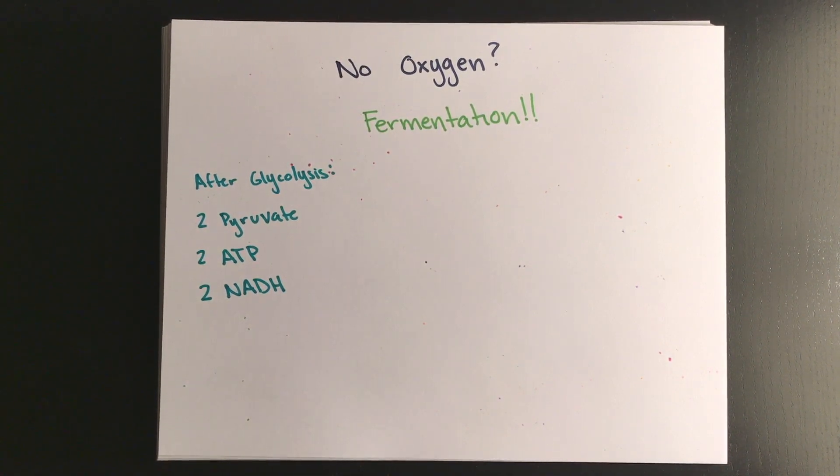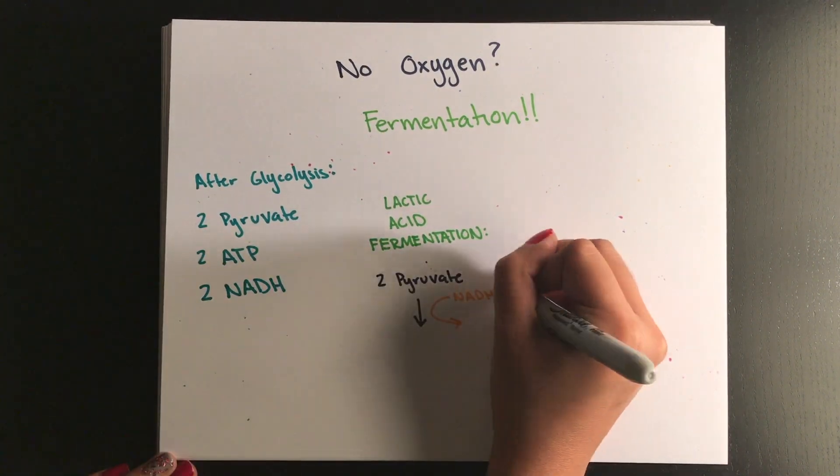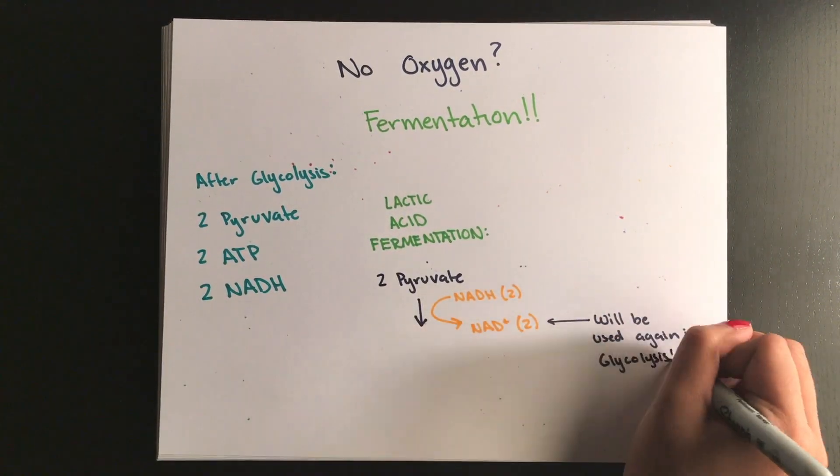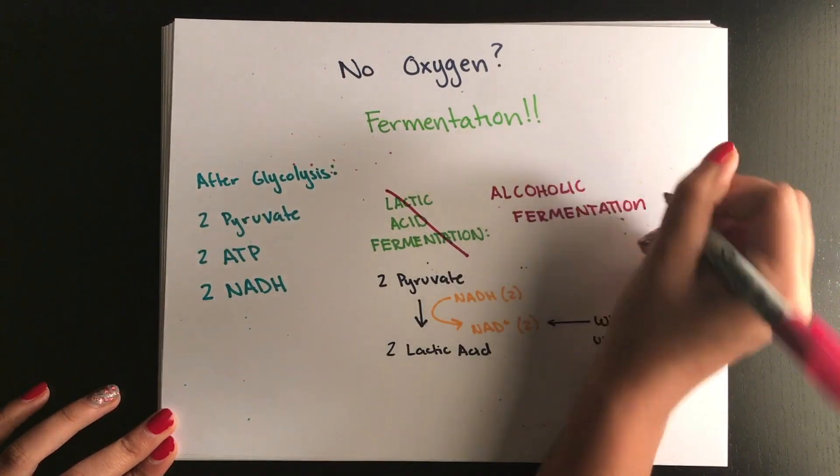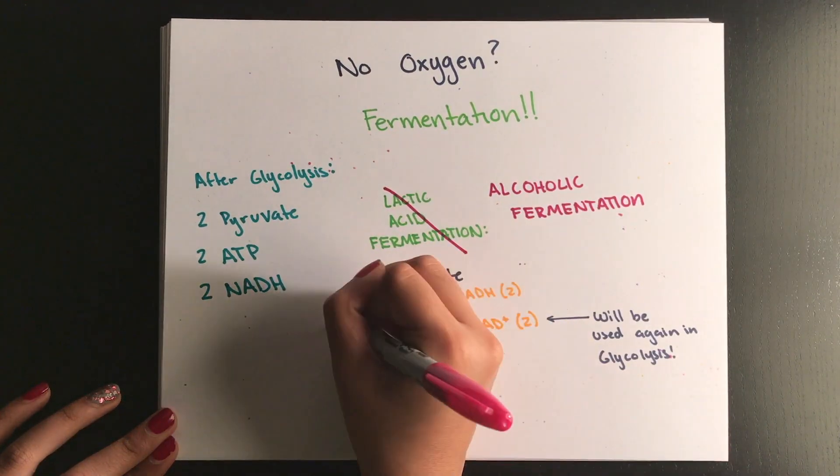So, in order to do this, cells undergo fermentation. During fermentation, NADH will give their electrons to pyruvate and pyruvate can either be reduced to lactic acid in humans or in certain yeast through alcoholic fermentation, which produces ethanol and CO2.